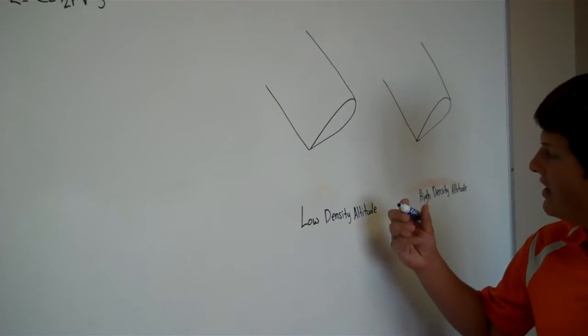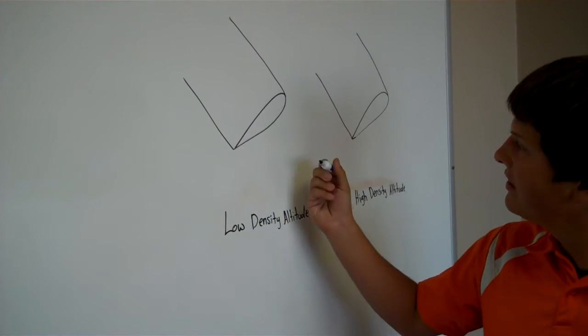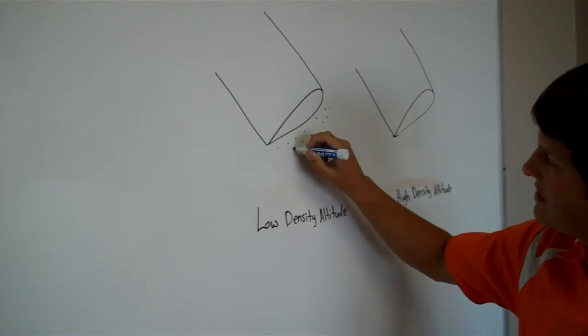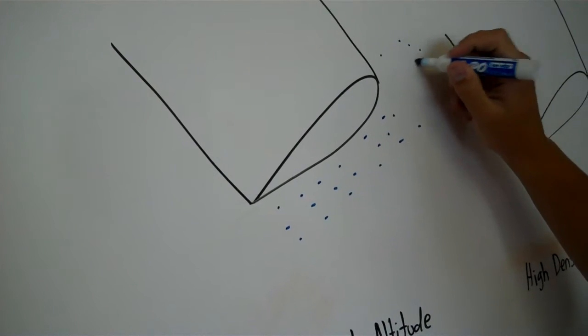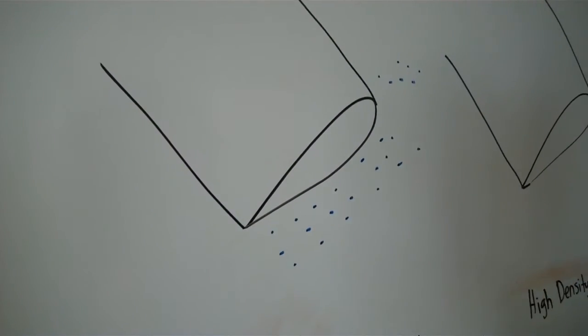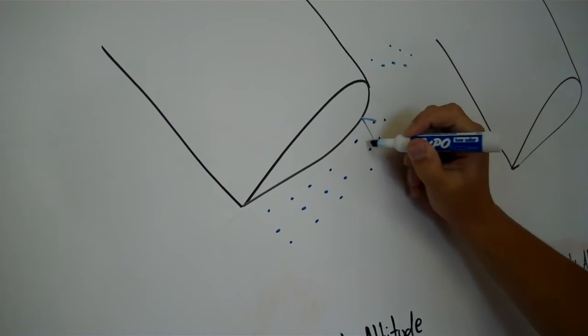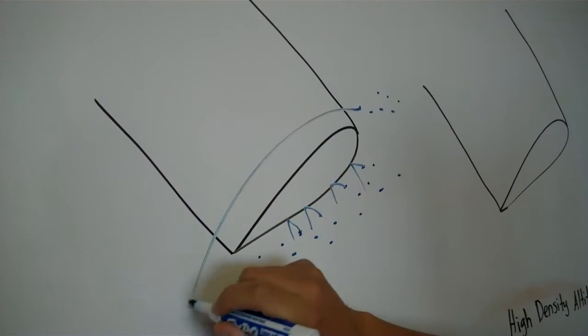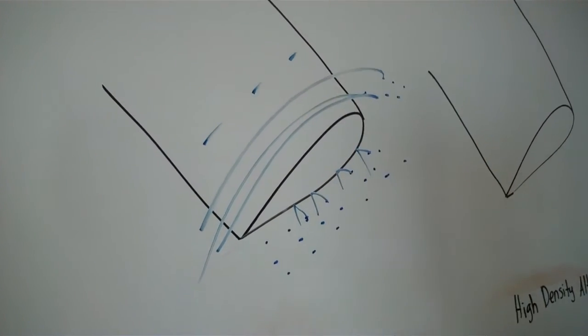On a low density altitude day, it can either be cold or just high pressure outside. We're going to use blue air molecules because they're cold. We'll have more molecules interacting with our airfoil - more bouncing off the bottom to push our blade up and more air molecules going over the top, creating that low pressure.